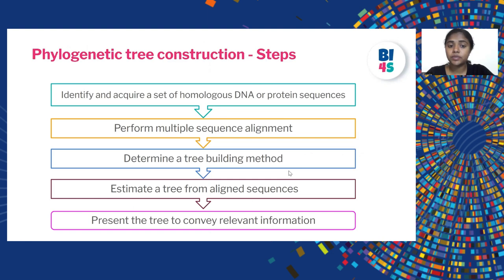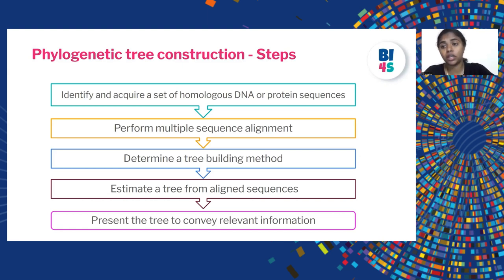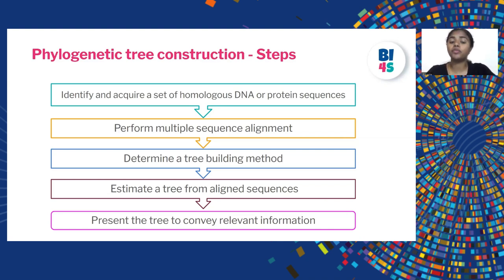There are certain steps in constructing a phylogenetic tree. First, we have to identify and acquire a set of homologous DNA or protein sequences. There is no point running multiple sequence alignment for sequences that are completely deviant, as you won't get meaningful similarity. Running on homologous sequences allows you to find the smallest differences. Then, we perform a multiple sequence alignment on the query sequences, determine which tree-building method to use — cladogram or phylogenetic — estimate a tree from the aligned sequences, and present the tree in a way that conveys the relevant information.